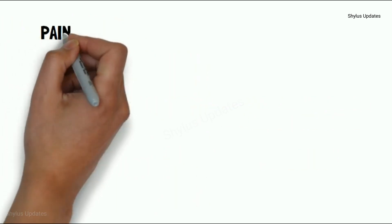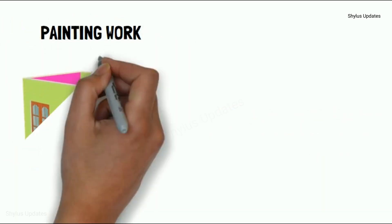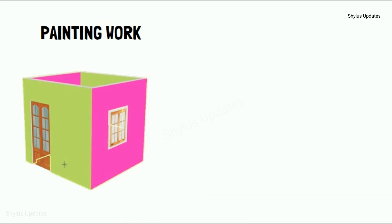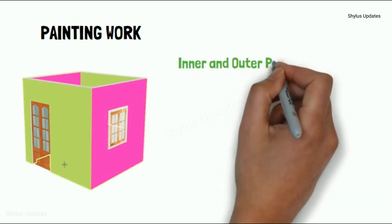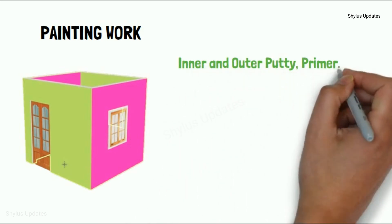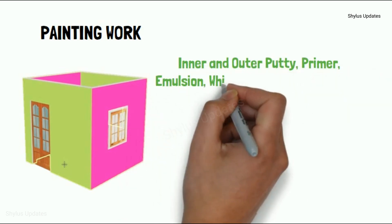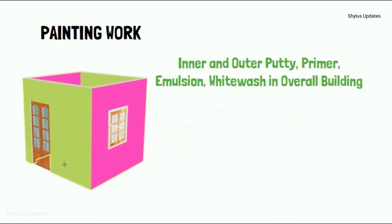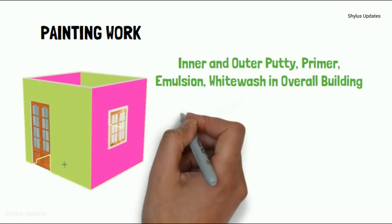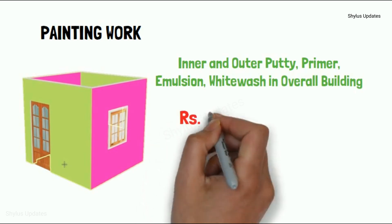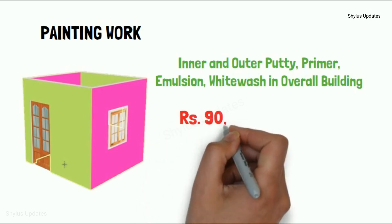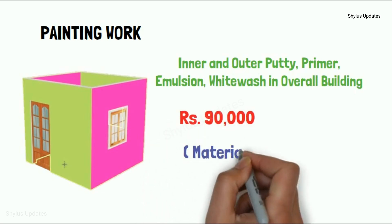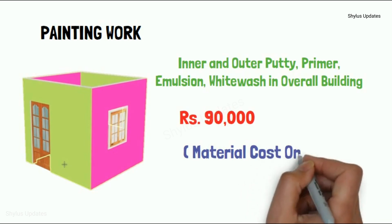Painting work: Inner and outer putty, primer, emulsion, whitewash in overall building. For that the amount is Rs. 90,000. This is only material cost.